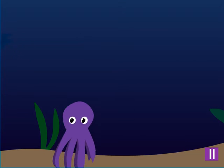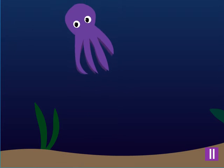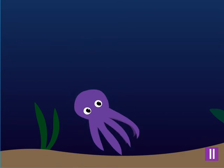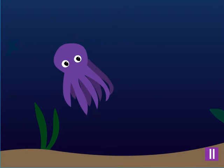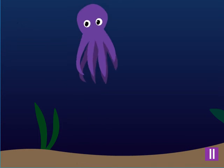An octopus is an animal that has a soft body with eight long arms. They are quite smart and live near the ocean floor. They can swim very fast when they need to.